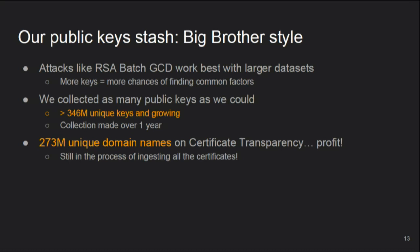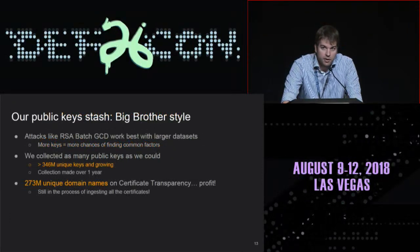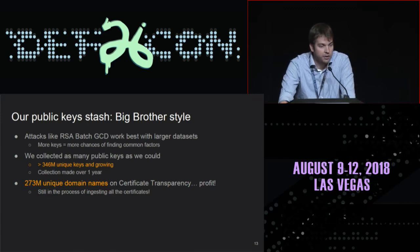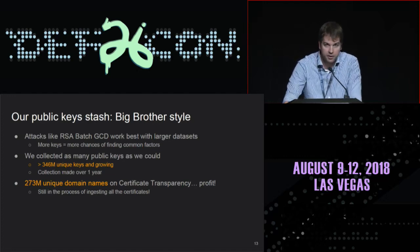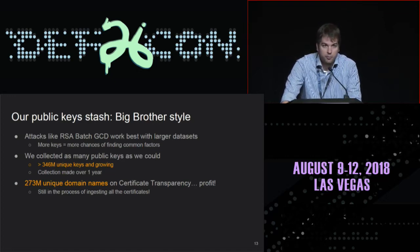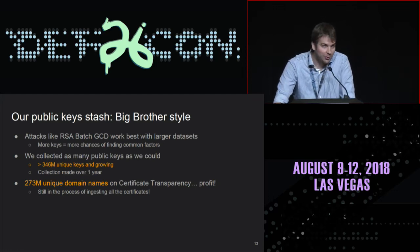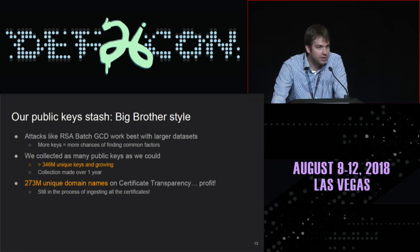Why is it interesting to have as many public keys as possible? When you run batch GCD on RSA keys, you are looking for common factors. The more keys you have, the more chances there are of having two keys with a common factor in the data set. We currently have over 340 million keys, and this is still growing — we are still ingesting keys from Certificate Transparency, a project initiated by Google. From those log servers we also collected a list of 270 million domain names and subdomains.